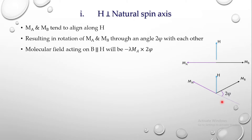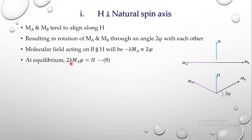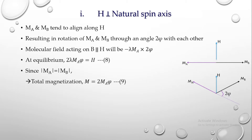This is valid for small angles. At equilibrium, this internal field will be equal but opposite to the applied magnetic field H, so we can equate: 2λ·MA·φ = H (equation 8). Since the λ constant is positive and spins are equal and opposite in antiferromagnetic material, the magnitude of MA equals the magnitude of MB. The total magnetization along the external field direction is M = (MA + MB)·φ = 2·MA·φ, which we call equation 9.